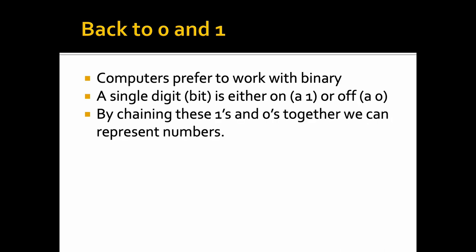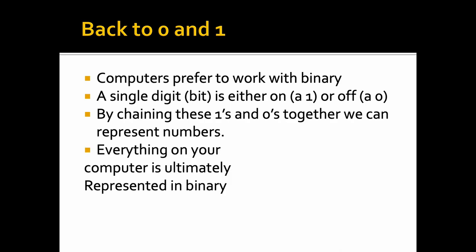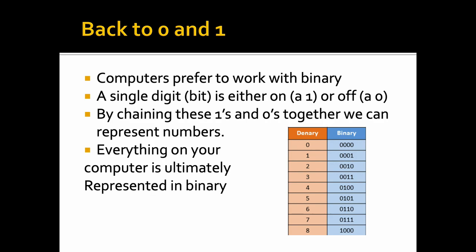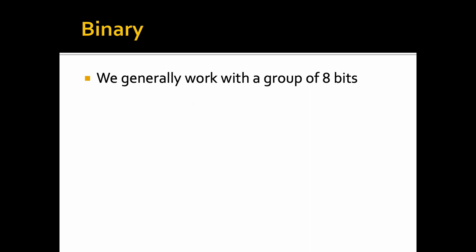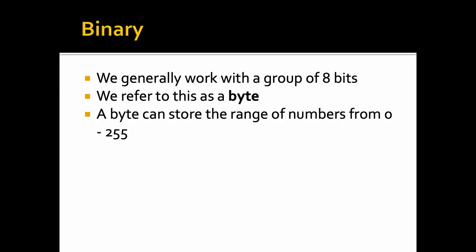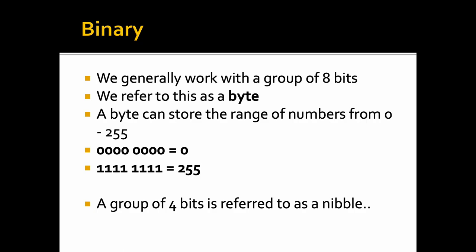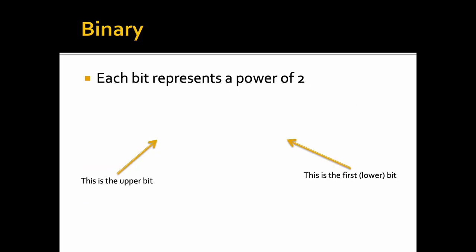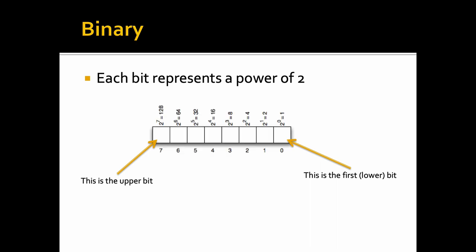By chaining these 1s and 0s together we can represent numbers — in fact, everything on your computer is ultimately represented in binary. We generally work with a group of 8 bits, which we refer to as a byte. A byte can store numbers from 0 to 255. Eight 0s gives us 0, and eight 1s gives us 255. A group of 4 bits is referred to as a nibble. Each bit represents a power of 2: the lowest bit gives us 1, and the highest bit, bit number 7, gives us 128.